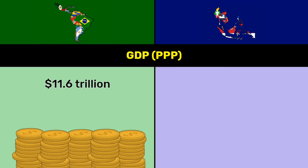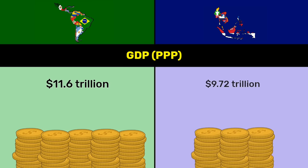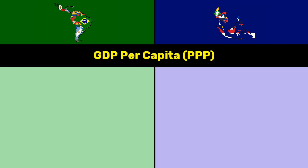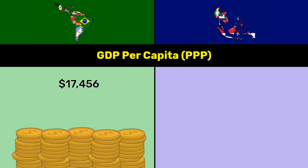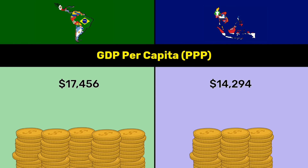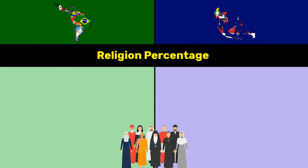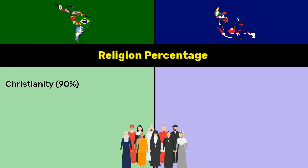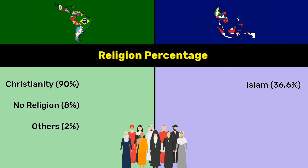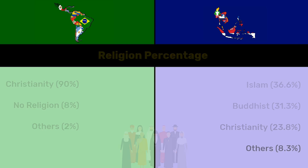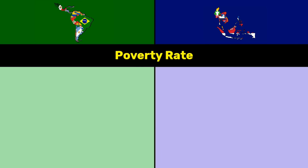GDP for PPP: 11.6 trillion dollars for Latin America versus 9.72 trillion dollars for Southeast Asia. GDP per capita for PPP: 17,456 dollars versus 14,294 dollars. Religion percentage: Christianity dominated by Latin America, followed by no religion and others. Islam dominated by Southeast Asia, followed by Buddhism, Christianity, and others.